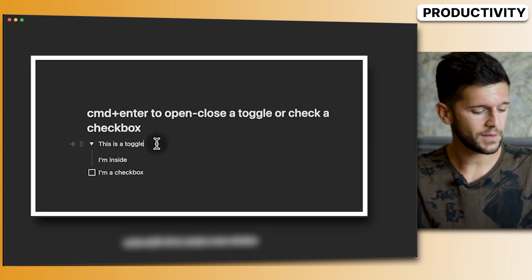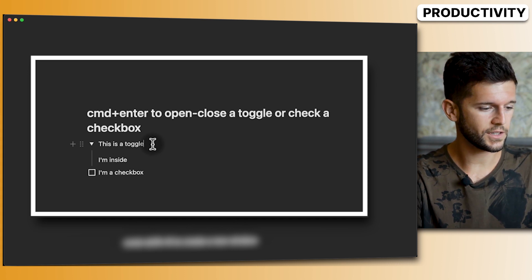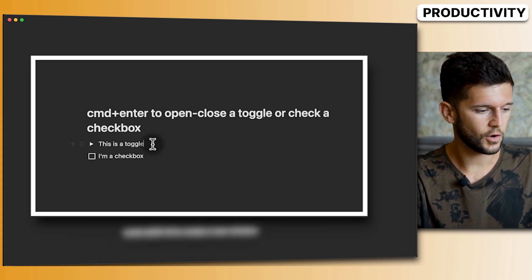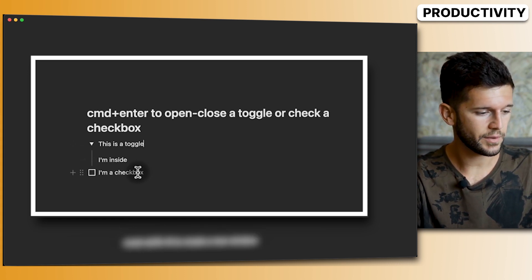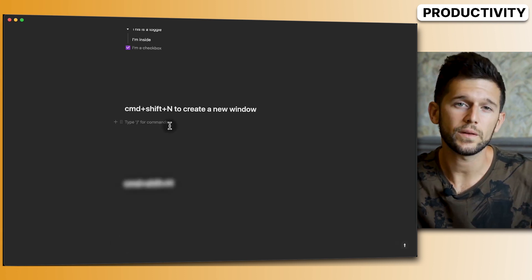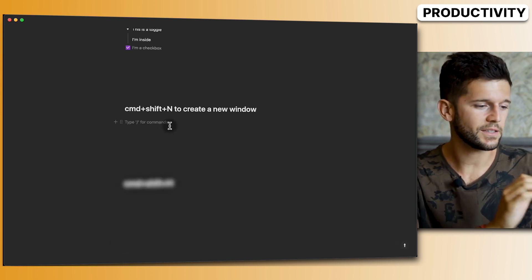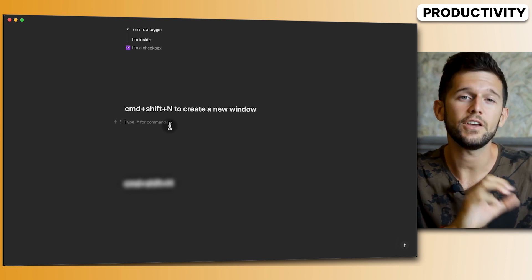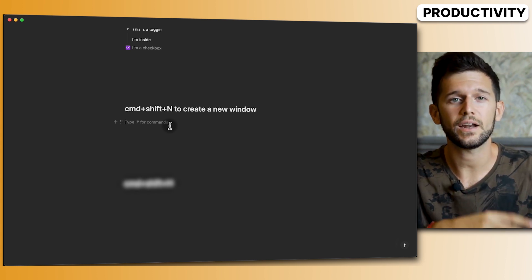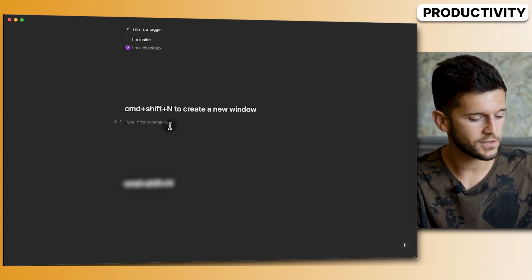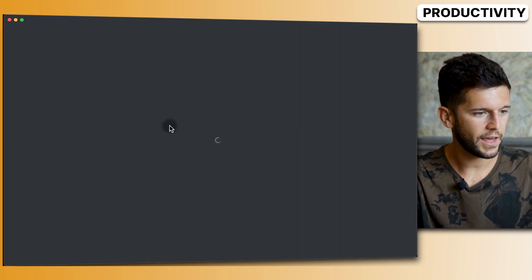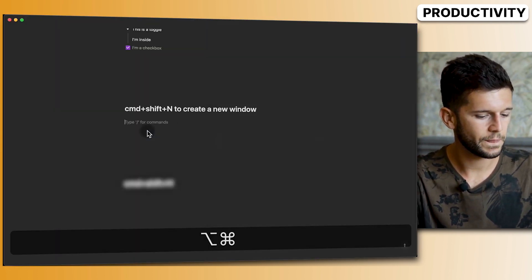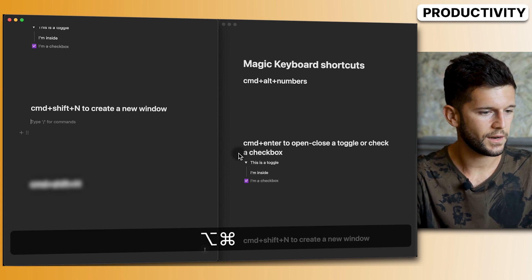Another shortcut I use all the time is Command+Enter — whenever I'm in a toggle to open and close it, or in a checkbox block to check it. I also use Command+Shift+N all the time to create a new Notion window. My typical use case is to open the same page in two windows side by side.